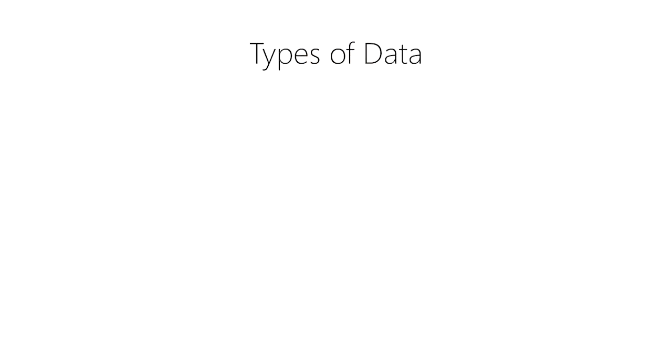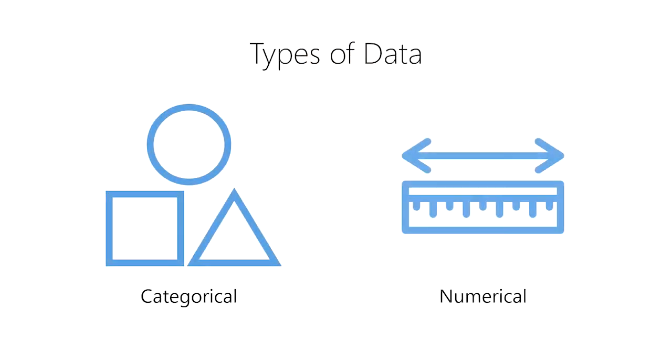What types of data exist in data science and how do we classify them? In data science, there are two main types of data: categorical data and numerical data.